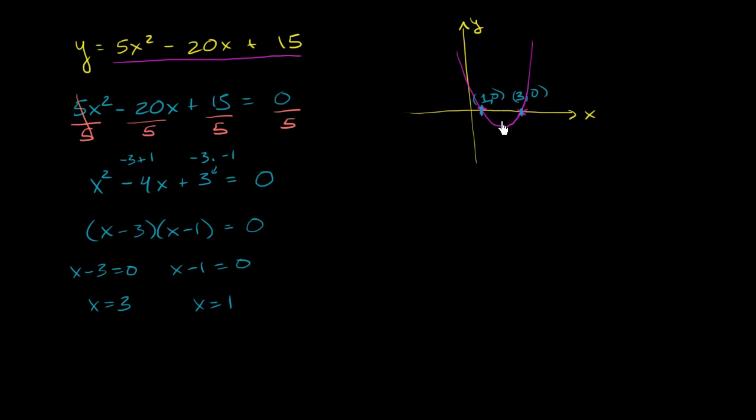Now the vertex always sits exactly smack dab between the roots. When you do have roots, sometimes you might not intersect the x-axis. So we already know what its x-coordinate is going to be. It's going to be 2. And now we just have to substitute back in to figure out its y-coordinate.